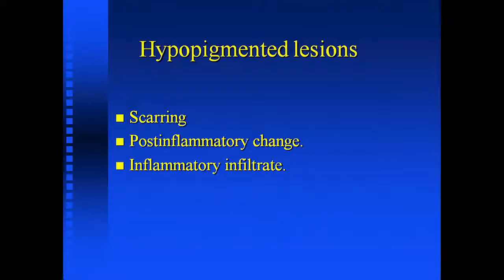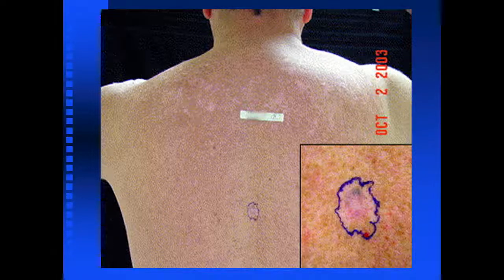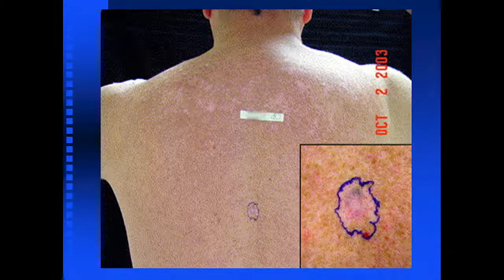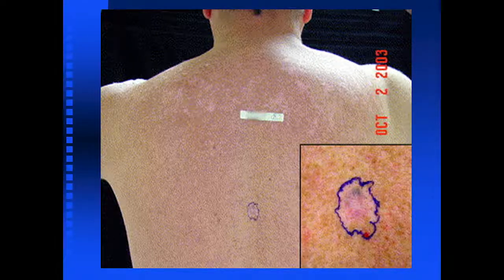Group two: hypopigmented lesion. You may see in the biopsy only scarring, post-inflammatory change — meaning melanin in the dermis or an inflammatory infiltrate. Here's just an example of what this could look like. Notice in this patient there's massive sun damage with hyper and hypopigmentation — you can see whitening and what looks like a little bit of dermal melanosis.